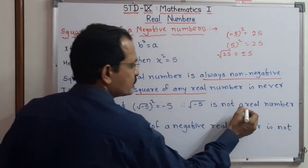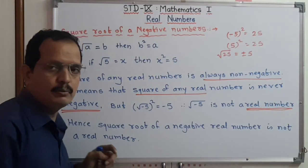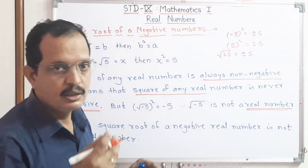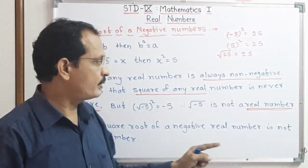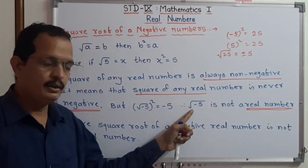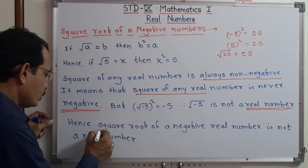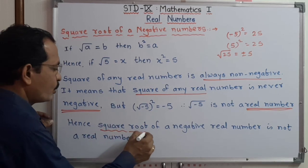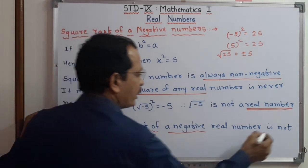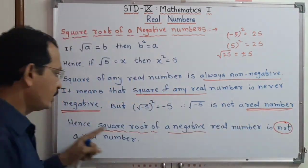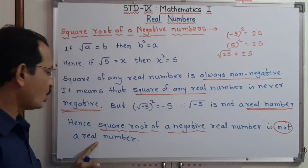So we know that the square of any real number is non-negative — it is never negative. In this case, the square root of minus 5 is not a real number. In real numbers — which include natural numbers, whole numbers, integers — the square root of a negative number is not a real number. Therefore we conclude: the square root of a negative real number is not a real number.